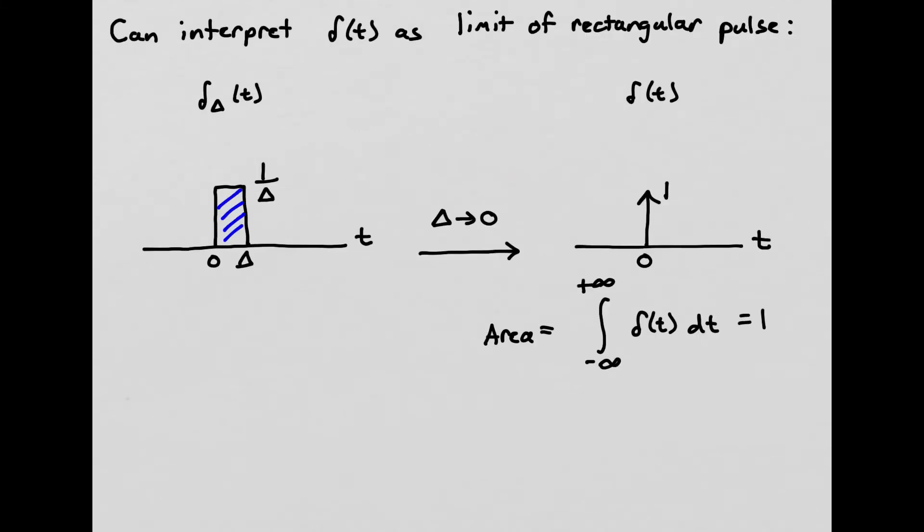So we can actually interpret the continuous time impulse in terms of a short rectangular pulse. So I've sketched a narrow rectangular pulse right here. It goes from 0 to big delta, and it has a height of 1 over delta. So that means that this area here is equal to, right, the area of a rectangle is equal to the width, which is delta, times the height, which is 1 over delta. So in this case, the area is equal to 1.